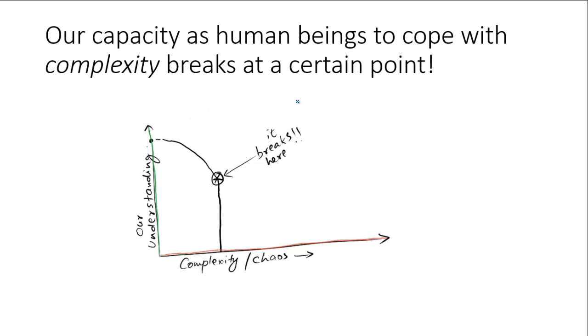This fancy diagram shows how we as human beings have difficulty managing complexity. Our ability totally breaks down at certain points. Complexity or chaos is on the x-axis, and the y-axis describes our understanding of a particular problem. When complexity increases, our understanding comes down until it totally breaks down.